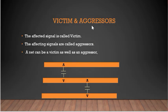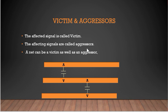Victim and aggressor are the most commonly used terminologies used while understanding crosstalk. The signal which is getting affected is called the victim, and the signal which is affecting is the aggressor. We need to remember that a particular net can act as a victim as well as an aggressor.